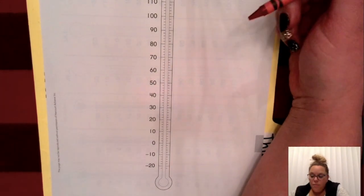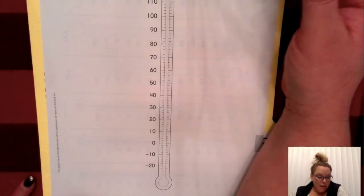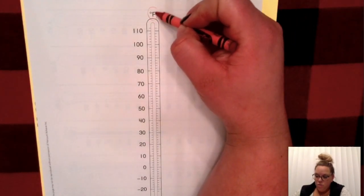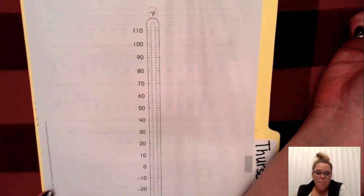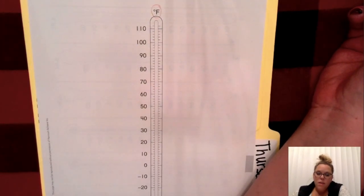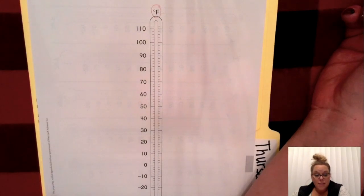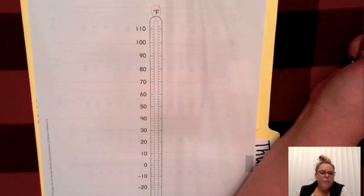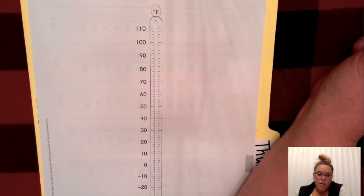You'll remember that many thermometers have two scales. One is called the Fahrenheit scale, which we always see with that capital F. And the other scale is called the Celsius scale. Because our temperature is usually reported on TV and in the newspaper and on our phones using the Fahrenheit scale, that is what we are going to use in class.